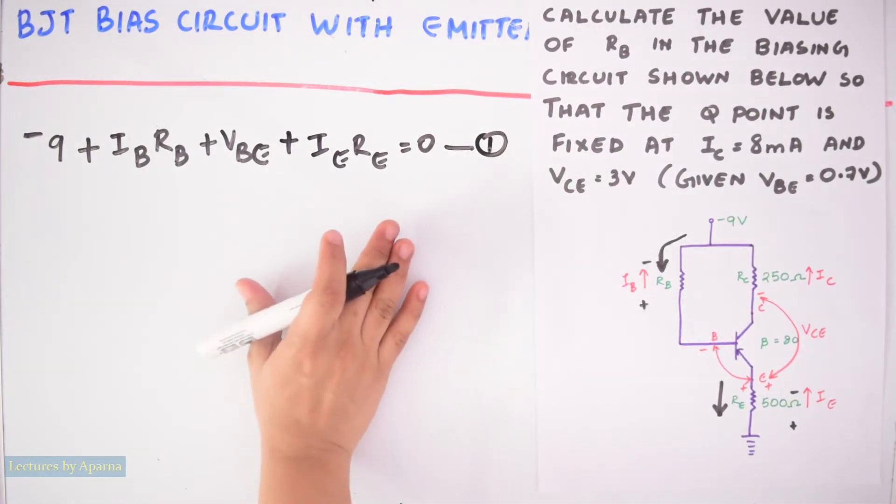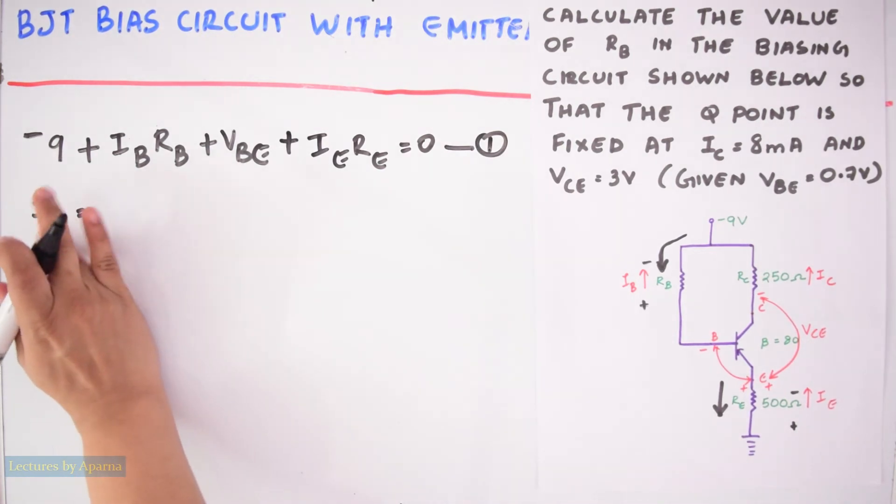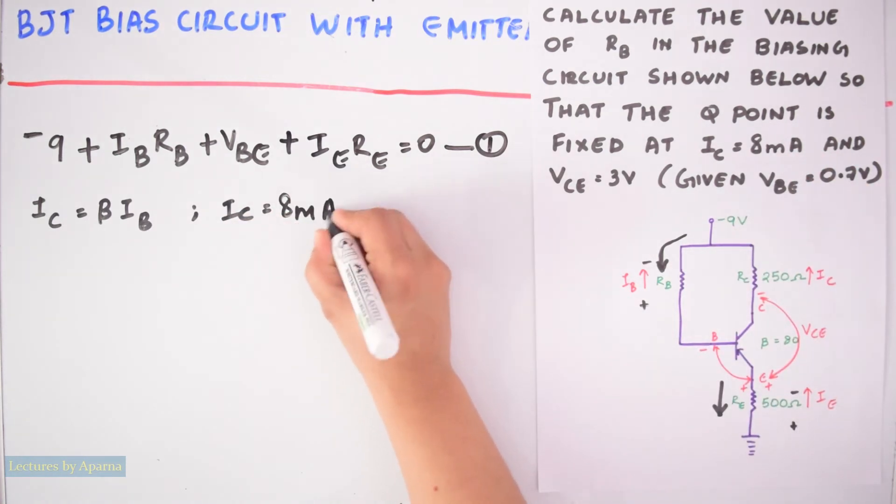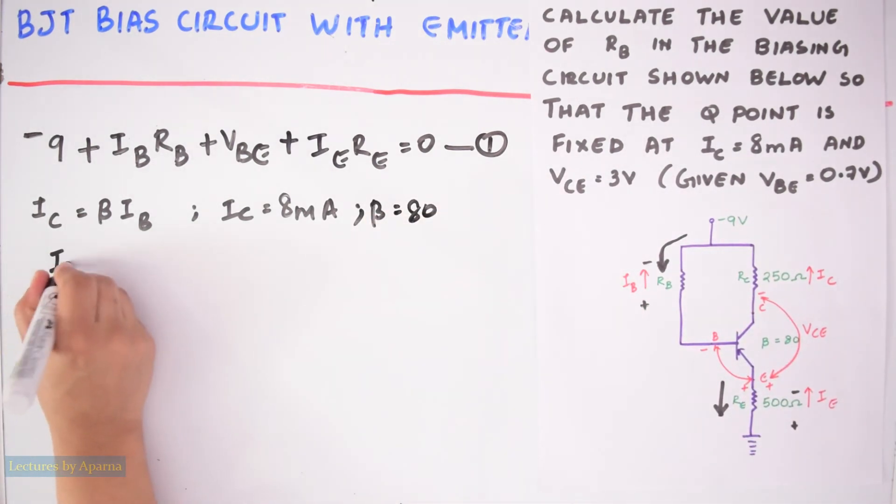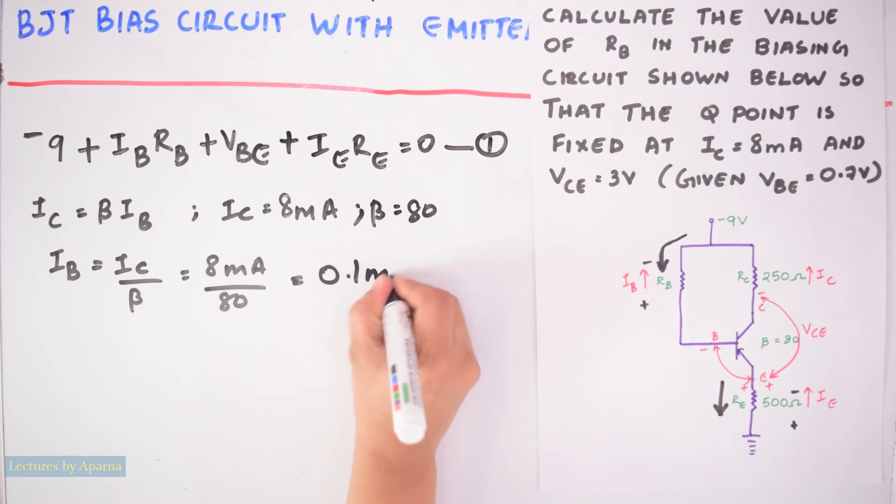Now from equation 1 we have to find RB. So first find IB. For that write the equation IC is equal to beta IB. IC is given in the question that is 8 milliampere and beta is equal to 80. So from this we can write IB equals 0.1 milliampere. So we got IB.